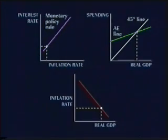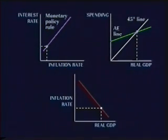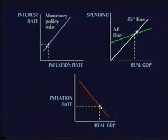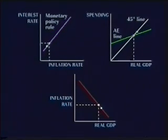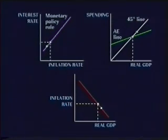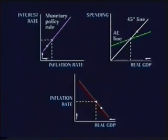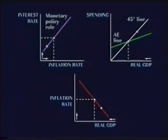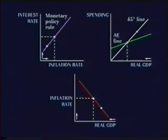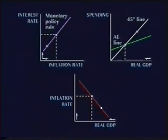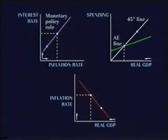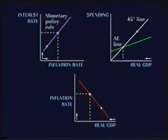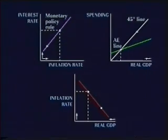Now let's put the pieces of the puzzle together. Imagine that the inflation rate rises by a certain amount. According to the Monetary Policy Rule, also known as Taylor's Rule, the Fed would then respond by raising the interest rate. This would cause the aggregate expenditure line to shift downward, resulting in a decline in real GDP.